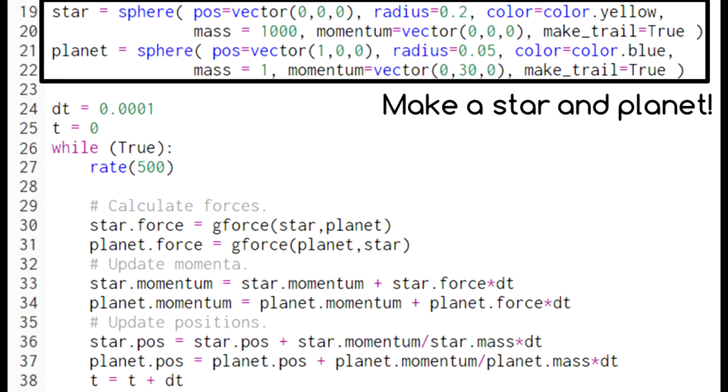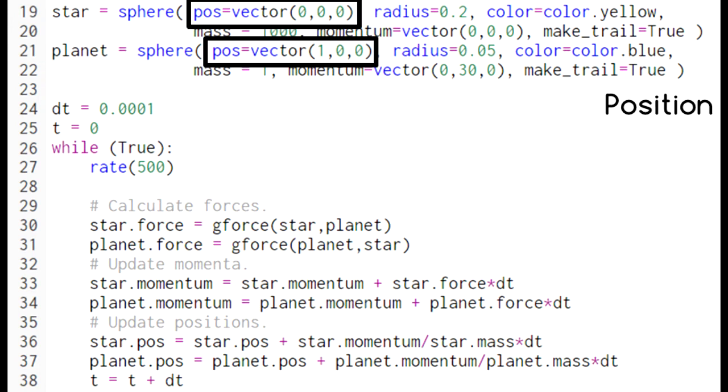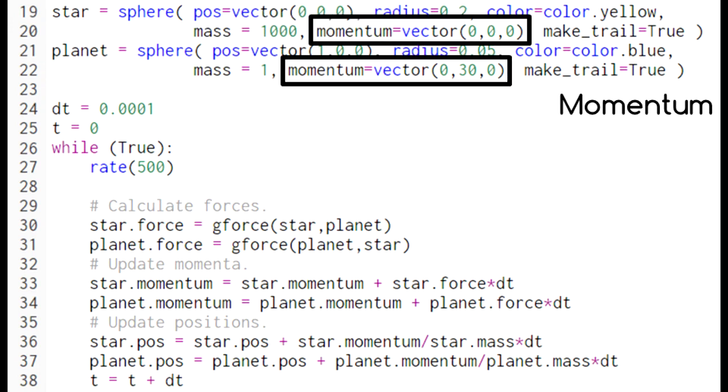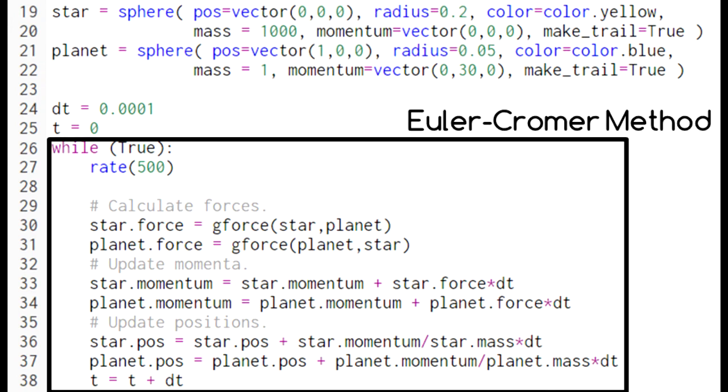To use this function, we create our star and our planet, giving each of them a position, a mass, and a momentum. We create the animation using the Euler-Cromer method.